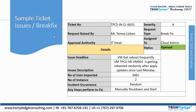The number of users impacted is 500 plus. The number of instances affected is two. The incident occurrence was random. For any steps performed to fix the issue, it was manually shut down and restarted. These were the steps performed as an initial fix attempt. This is how a sample ticket for issue or break fix is to be structured.